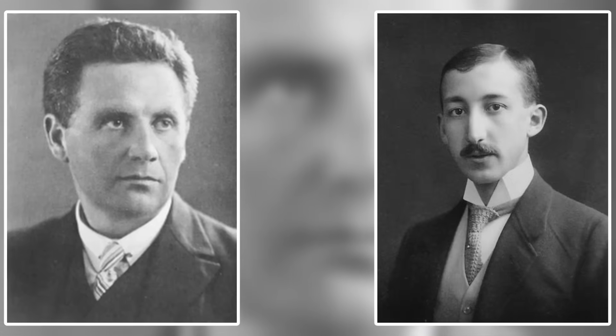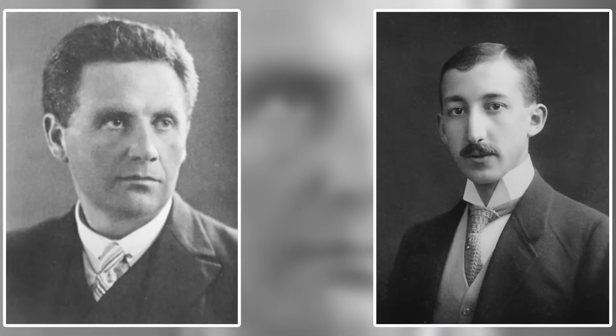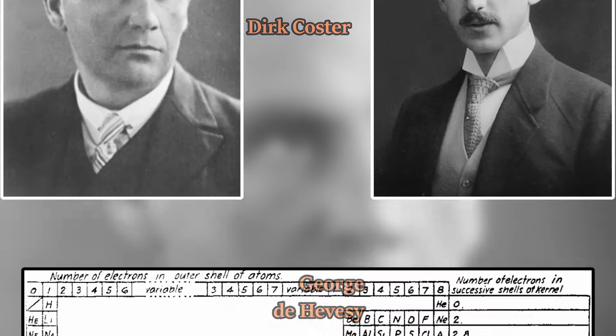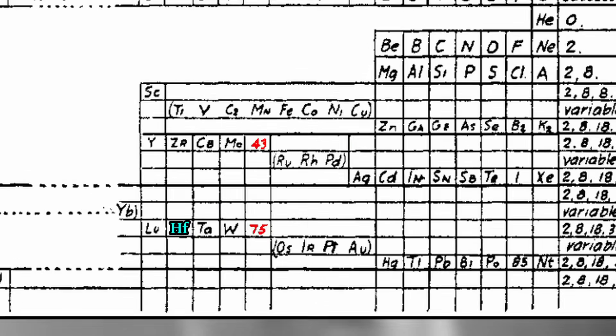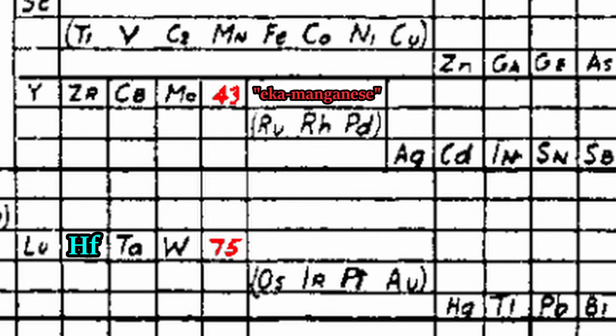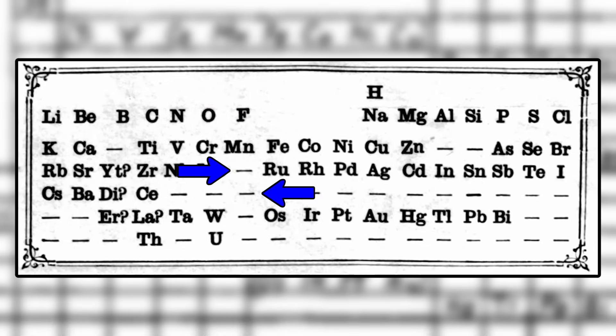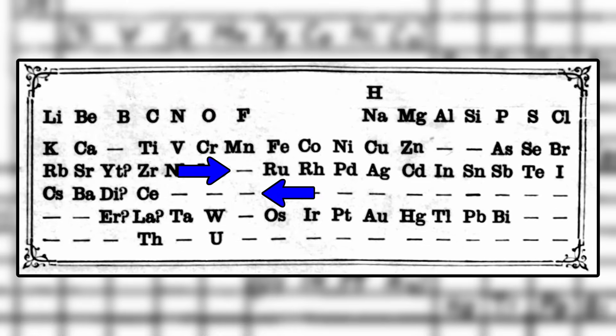By 1923, after the discovery of the element hafnium by Dirk Coster and George de Hevesy, only two transition elements predicted by Mendeleev remained to be discovered. These two were named Eka-manganese and Dvi-manganese, as they occupied spaces one and two away from manganese in the same group on the table.